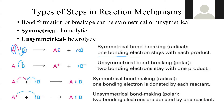In unsymmetrical or heterolytic fission, the two bonding electrons both stay with only one product. After breakage, the two bonding electrons remain with product B and not with A — that is the indication of unsymmetrical bond breakage, which is heterolytic fission.